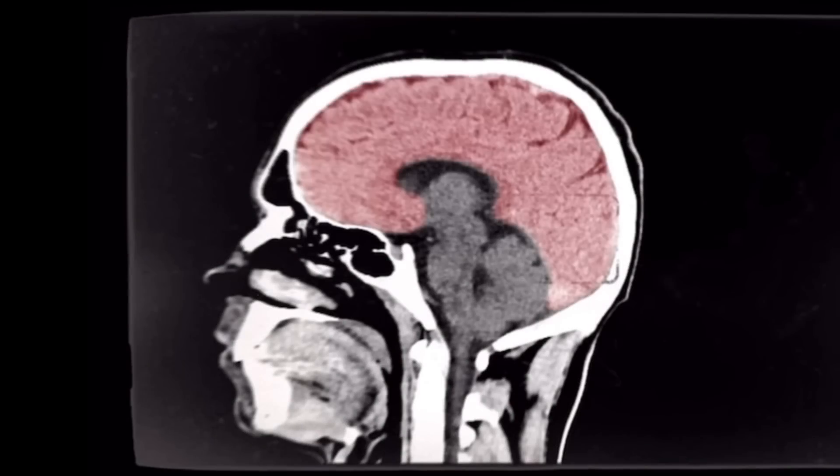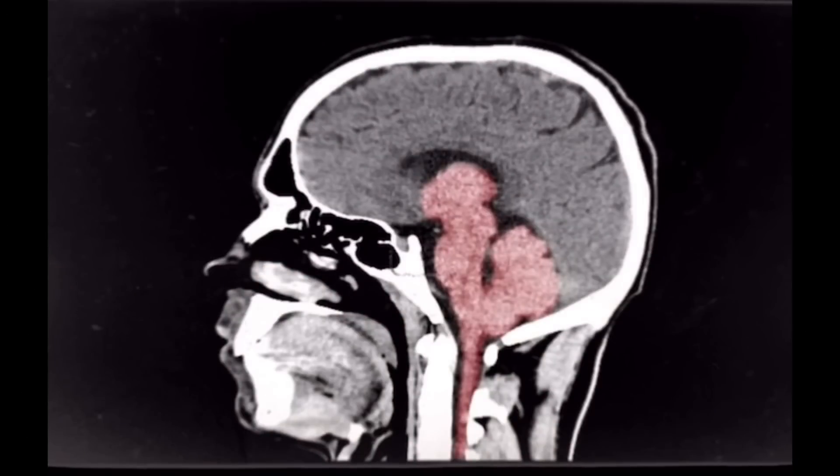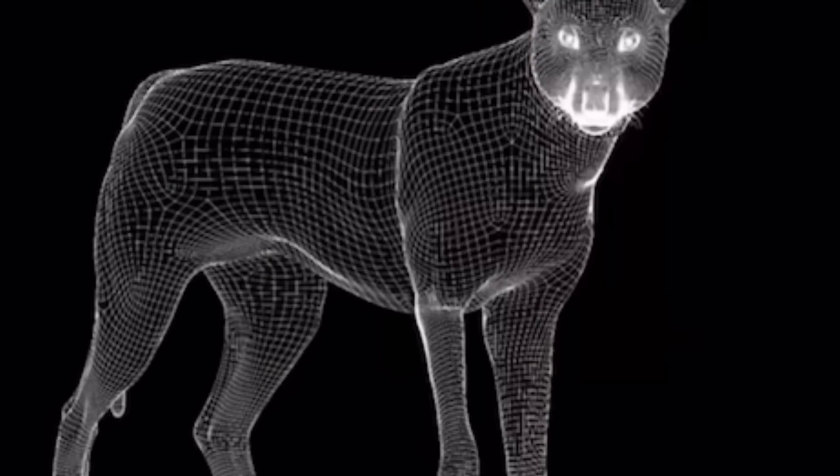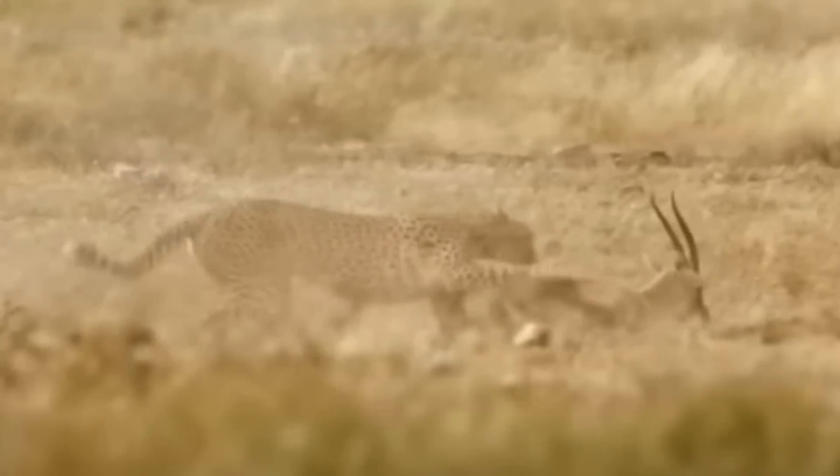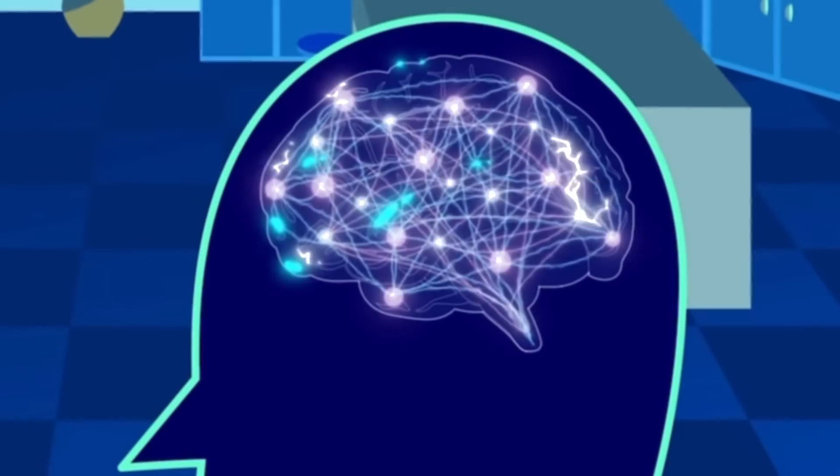We believe mammals evolved a neocortex on top of the old reptilian brain, capable of modeling environments, consciously making predictions, and instructing reactions based on the things we've experienced—our reference frames.